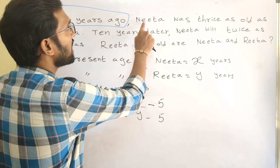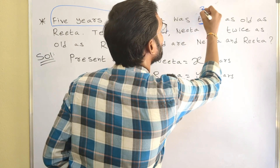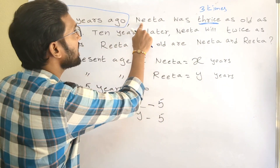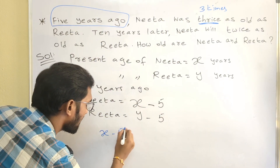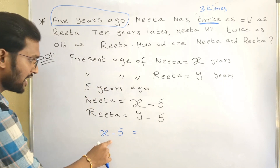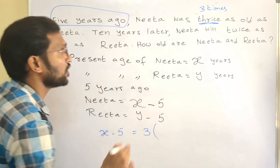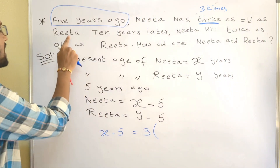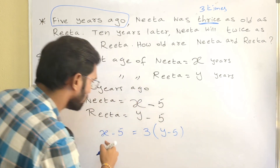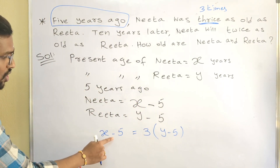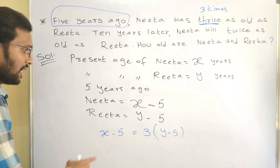Now, what does the problem say? Nita was thrice — keep this word in mind — thrice is nothing but 3 times. Nita's age 5 years ago is X minus 5, which equals 3 times Rita's age, which is Y minus 5. So 5 years ago, Nita was 3 times as old as Rita.